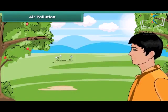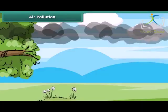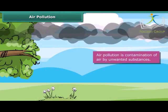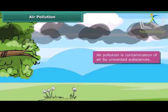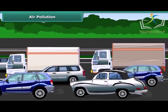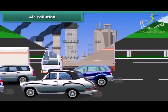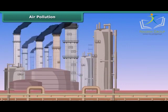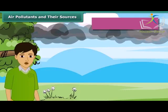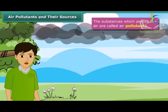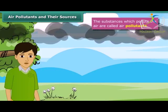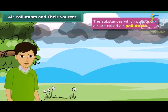Air is necessary for our lives, but air is getting polluted day by day due to presence of unwanted substances in it. These substances are released when fuels burn in vehicles, or factories and power plants produce them as gaseous wastes. The toxic gases that pollute air include carbon dioxide, sulfur dioxide, nitrogen dioxide, and carbon monoxide.